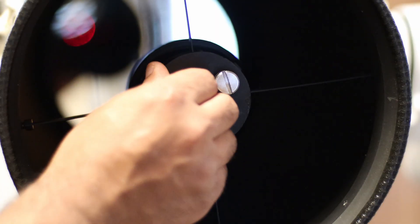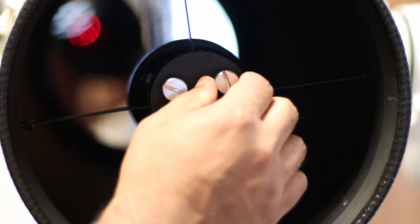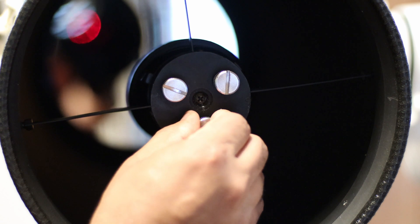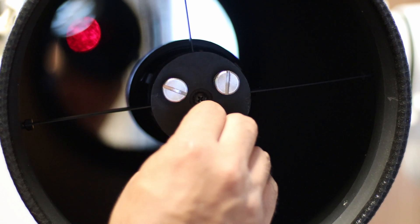To adjust this, we need to make some adjustments to the secondary mirror. My scope has collimation knobs. Yours might need an Allen key to make adjustments to the secondary mirror. Make small movements until the laser points directly in the middle of the circle.